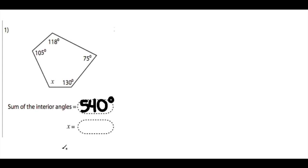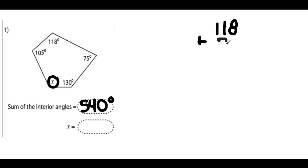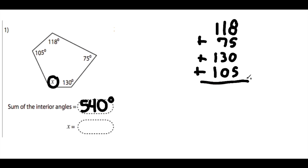Now that we know the angle sum, we want to find the measure of our missing angle. To do this, we first need to determine the measures of the angles we already have and add them all together. So we have 118 plus 75 plus 130 plus 105.